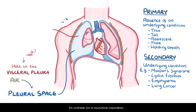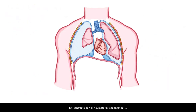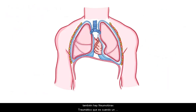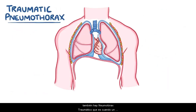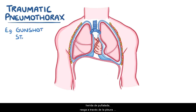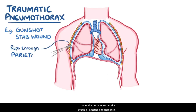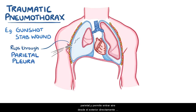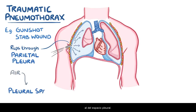In contrast to spontaneous pneumothorax, there's also traumatic pneumothorax, which is when trauma — like a gunshot wound or a stab wound — rips through the parietal pleura, allowing air to enter from the outside directly into the pleural space.